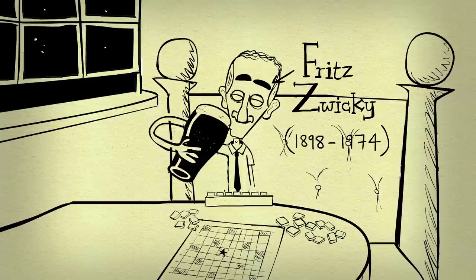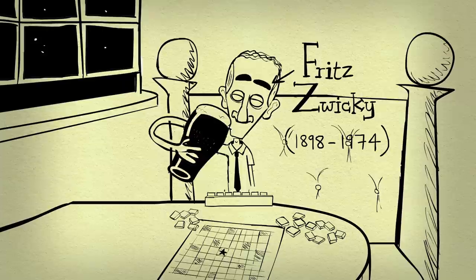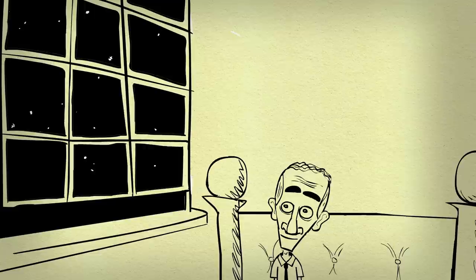Fritz Zwicky was a Swiss astronomer who could probably get you 81 points on a triple word score in Scrabble. In the 1930s, he noticed that galaxies within clusters were zooming around far quicker than their mass would logically dictate.